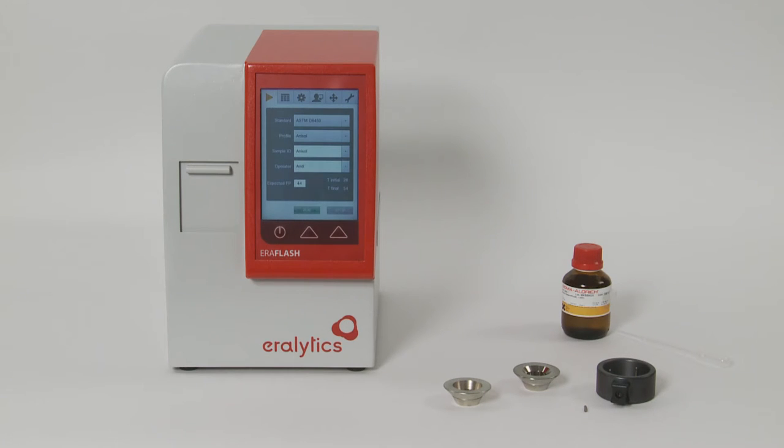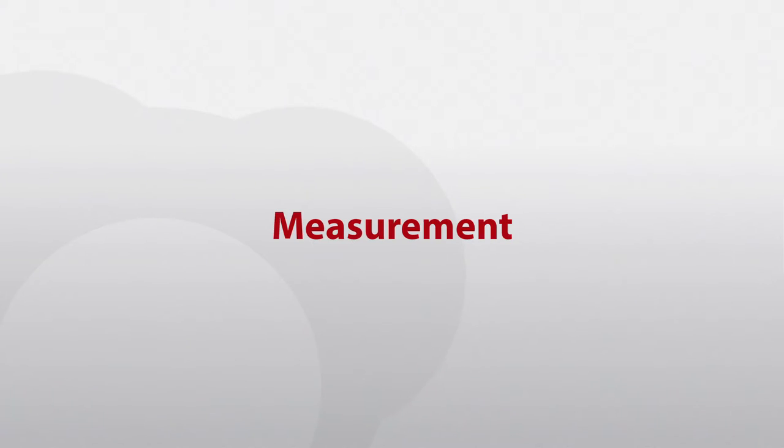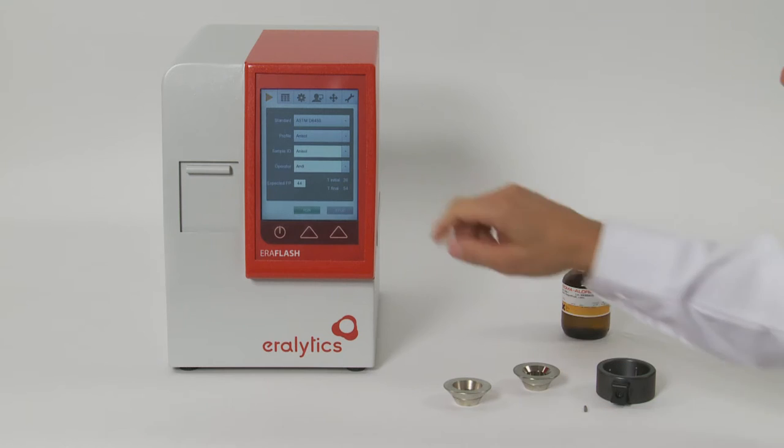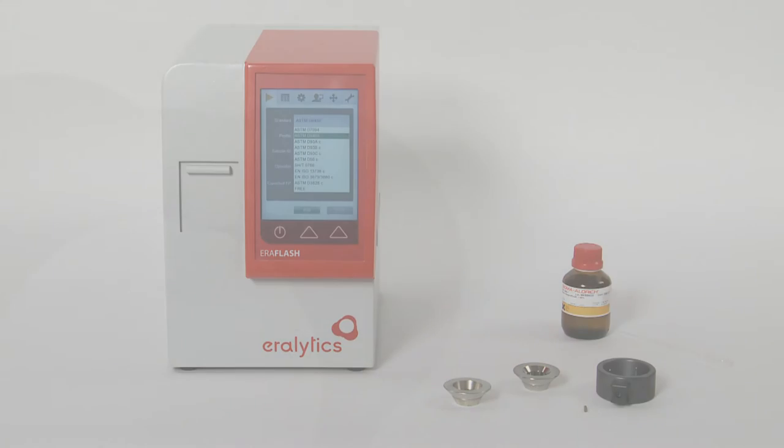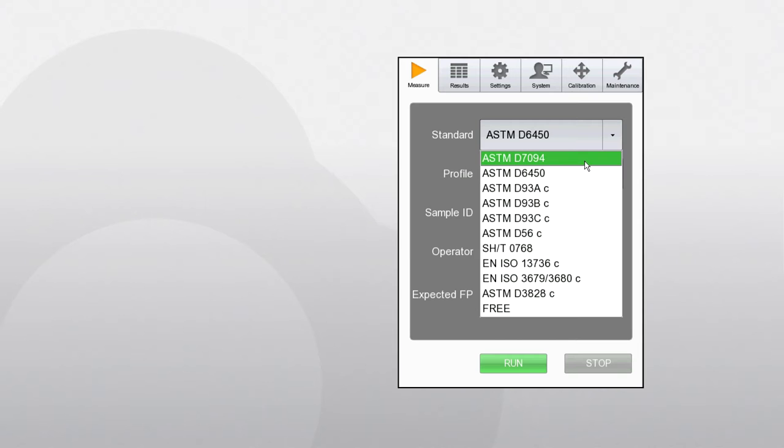For measurement, select one of the standard methods listed in the first drop-down list. Error Flash strictly follows the latest ASTM flashpoint methods: ASTM D6450 and ASTM D7094.